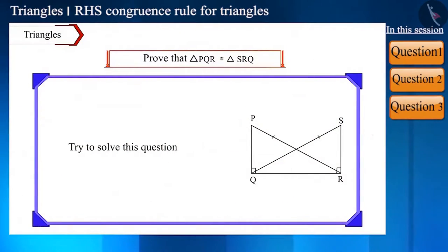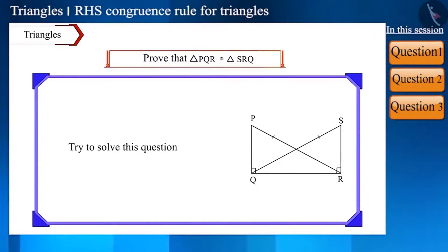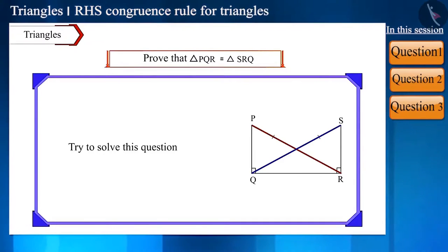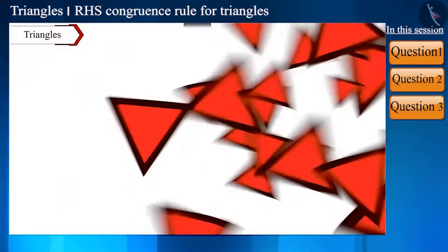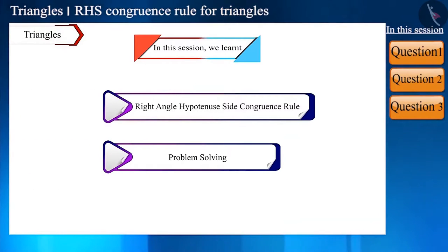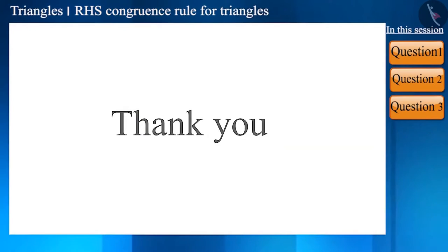Now try to solve this question. With the help of the figure, prove that triangle PQR is congruent to triangle SRQ when PR is equal to SQ. In this session we solved a few questions based on the right angle hypotenuse side congruence rule. Now let's meet in the next video. Thank you.